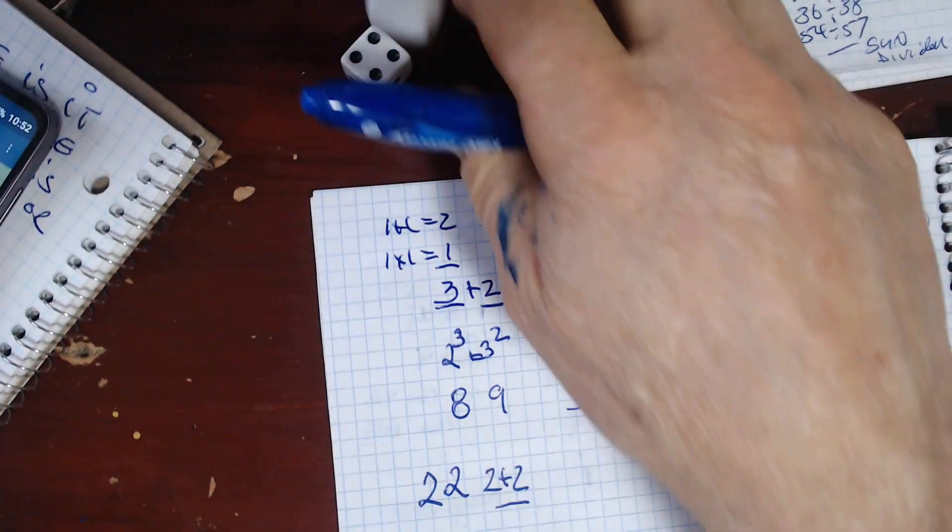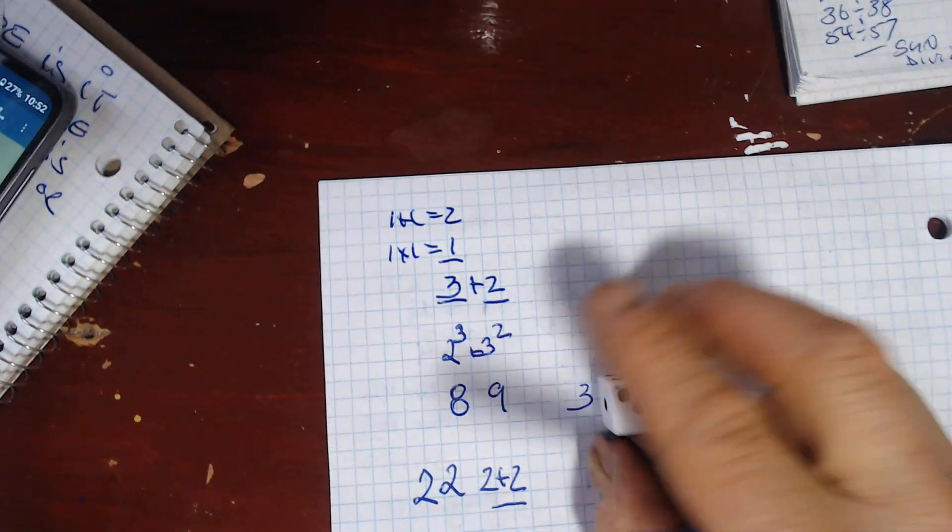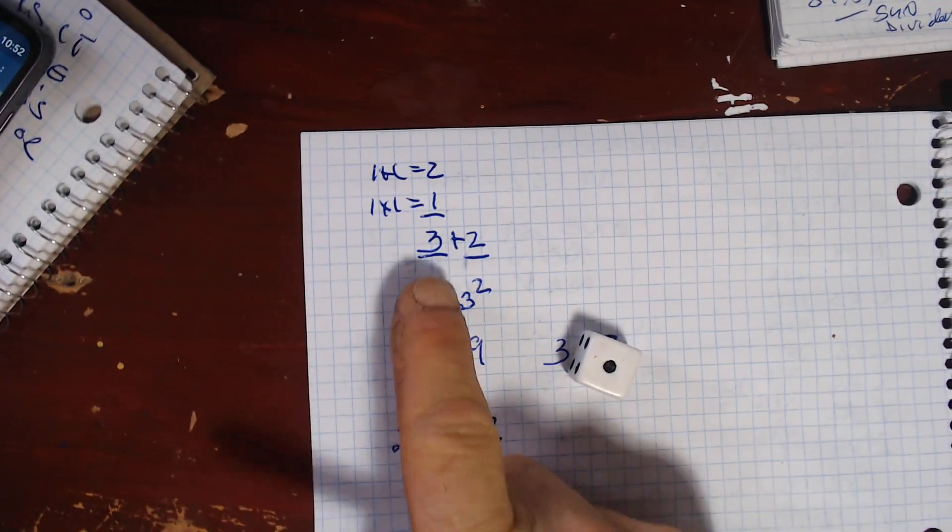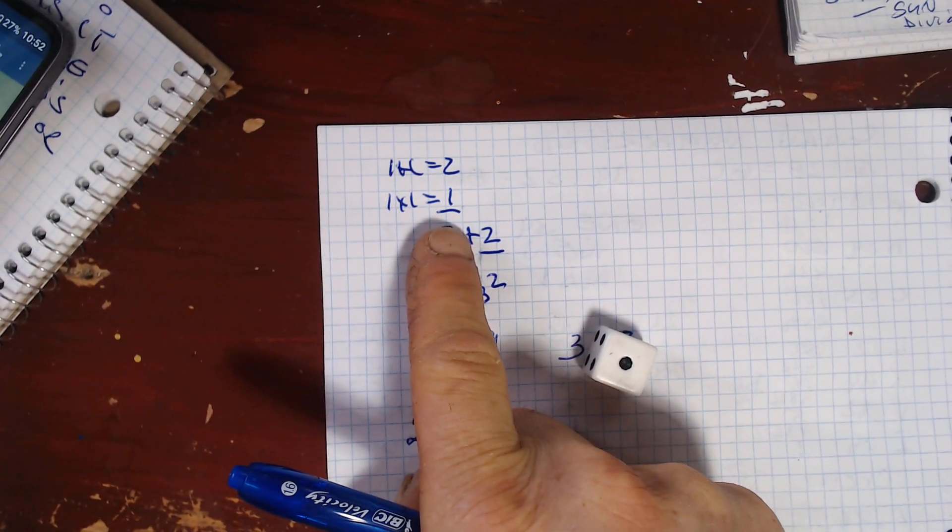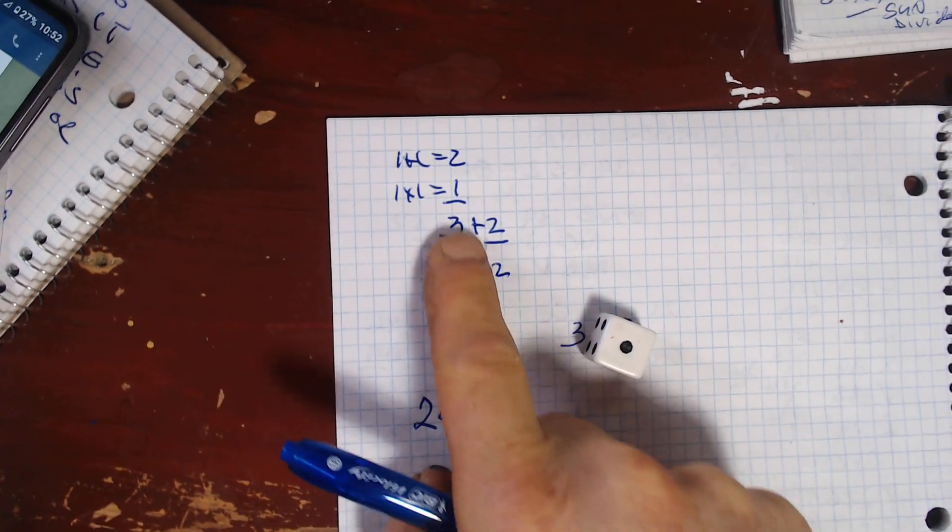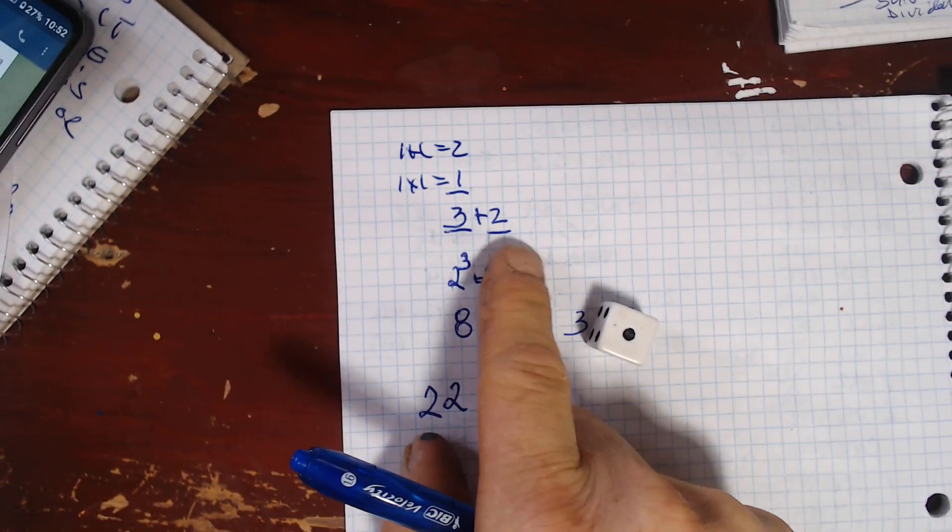Think about it. Two dice cubes. Fibonacci. One times one, one plus one equals three and two. Only use three and two, as in Fibonacci, one is done.